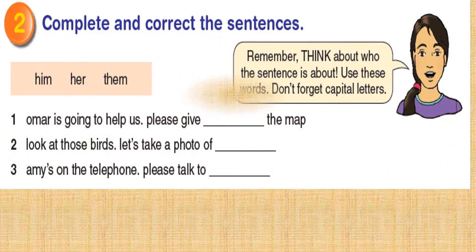Exercise 2: Complete and correct the sentences. Let's read the rubric. Remember, think about who the sentence is about — about a boy, about a girl, about more than one. We are going to use these words: him — a pronoun that refers to a boy or a man; her — a pronoun that refers to a girl; them — refers to more than one. We have already studied them in unit 13.